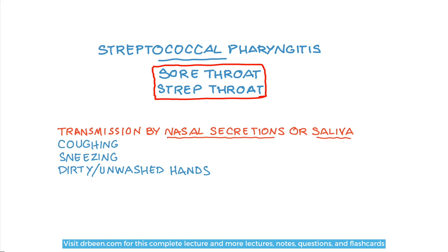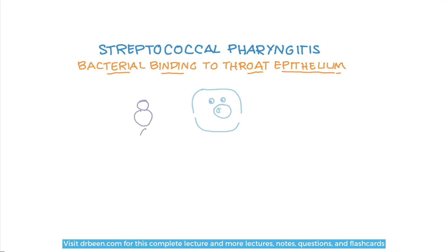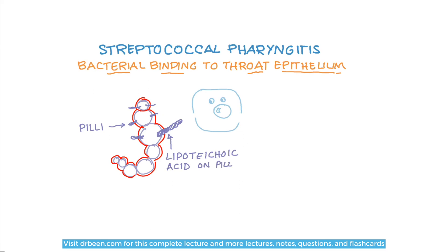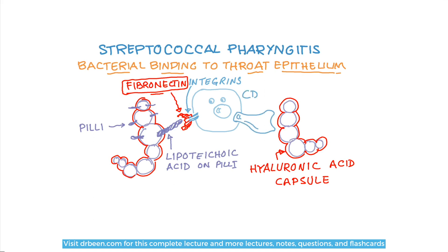Once the streptococci are introduced into the pharynx of a patient, they bind to the epithelium by either of two mechanisms. One is that the pili from the pathogen, which are covered with lipoteichoic acid, bind to fibronectin on our epithelium, allowing adherence and then infection. The other mechanism is that the hyaluronic acid capsule binds to CD44 clusters on our epithelial cells, and that binding causes the infection as the pathogen goes deeper into the tissue and causes pharyngitis.